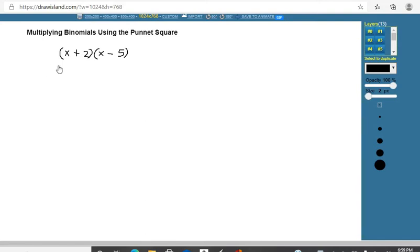So we've got these two binomials, x plus 2 times x minus 5, and I'm going to draw myself a Punnett square.